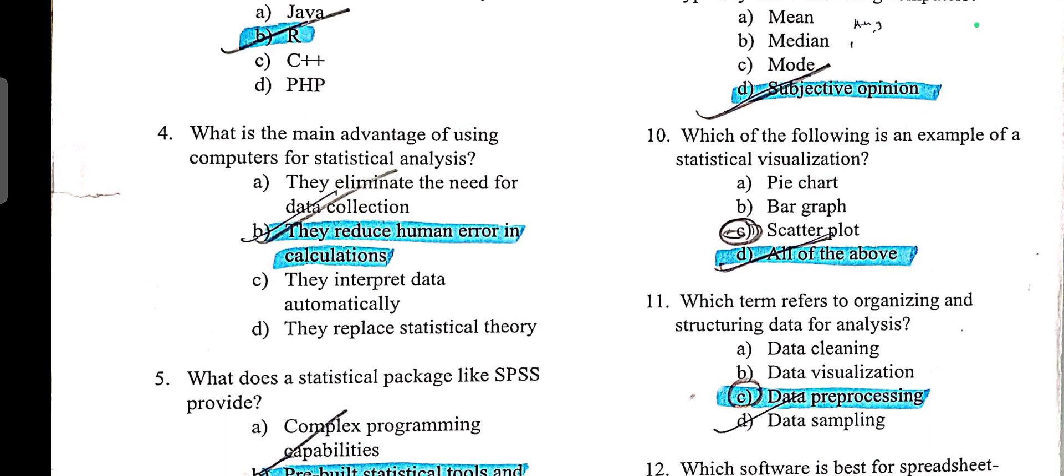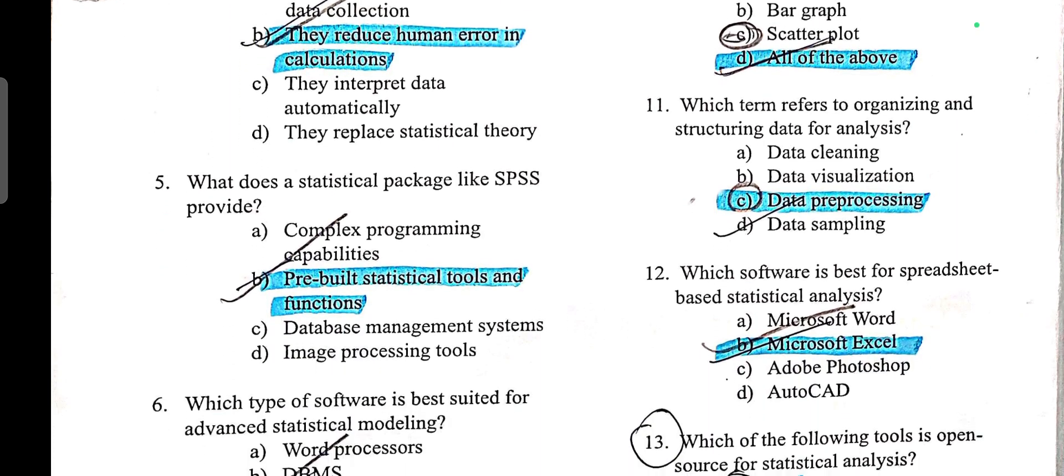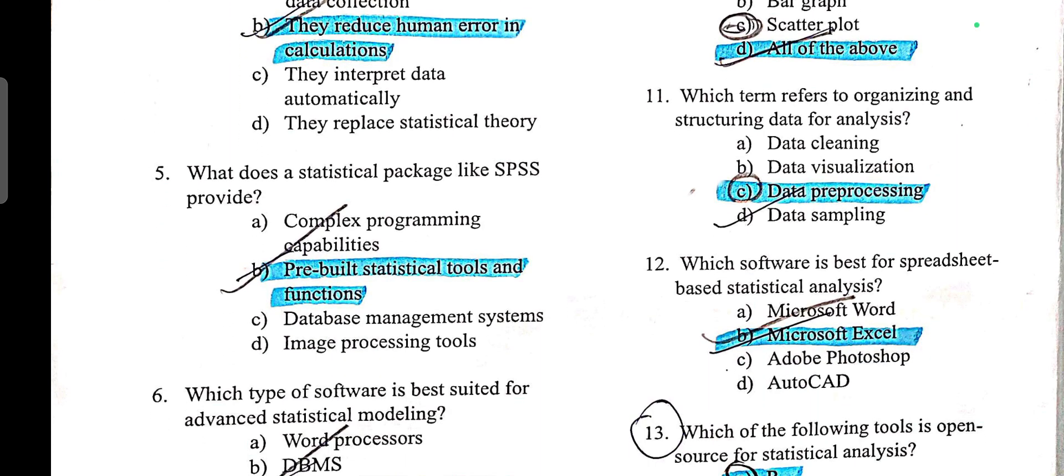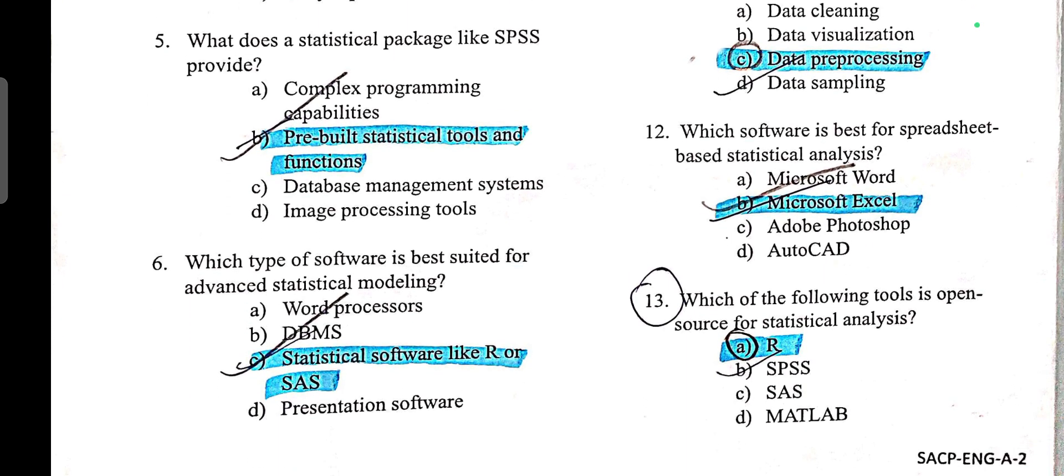What is the main advantage of using computer for statistical analysis? Reduce human error in calculation. What does statistical package like SPSS provide? Pre-built statistical tools and functions. Which type of software is best suited for advanced statistical modeling? Statistical software like R or SAS.